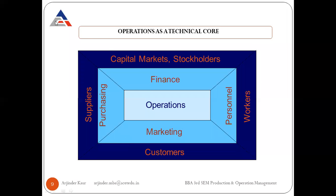Operations management is the technical core of an organization. Other functions — finance, HR, marketing, and purchasing — support specific stakeholders: HR manages workers, finance deals with capital markets and stockholders, purchasing handles supplier relationships, and marketing is focused on customers. But operations is the technical core. Just as the performance of a car depends on its engine, you can think of operations management as the engine of the organization.